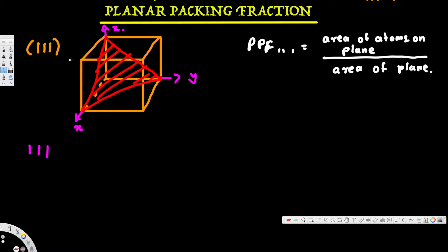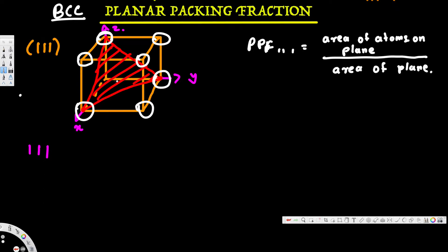This is a body-centered cubic (BCC) structure. For a BCC structure there are eight atoms at the corners, each contributing one-eighth of an atom, and one atom in the middle. Now, the (1 1 1) plane is a triangle crossing these three corner atoms.